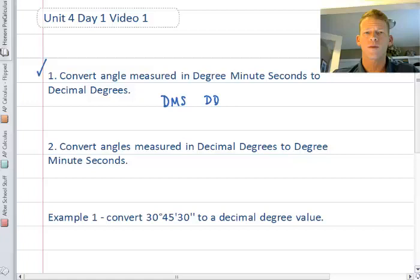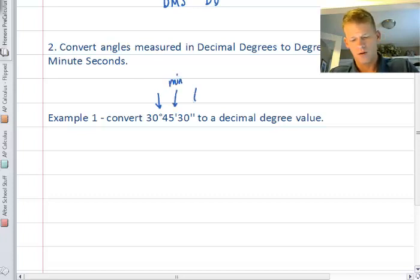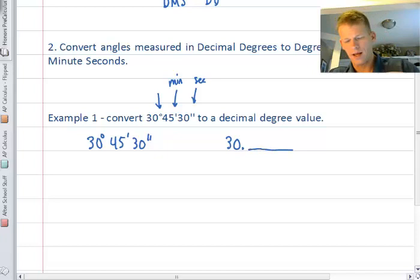If you did well with chemistry and unit conversions, this should be easy. Here we go. We're going to first convert 30 degrees 45 minutes 30 seconds. The little circle represents degrees, the one tick represents minutes, and two ticks represents seconds. Think of this in terms of the hands of a clock. The 30 degree part is just going to be 30 point, and then the rest is going to be the decimal portion.